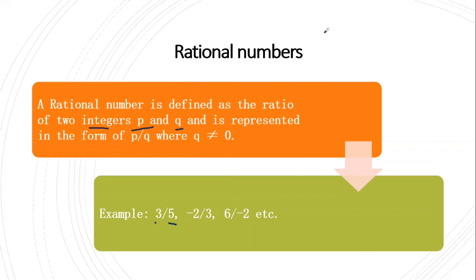A few more examples: three by minus five — numerator is an integer, denominator is an integer, and the denominator is not equal to zero. We can also give zero by five or zero by ten, where the numerator is an integer and the denominator is an integer. So these are some of the examples of rational numbers.